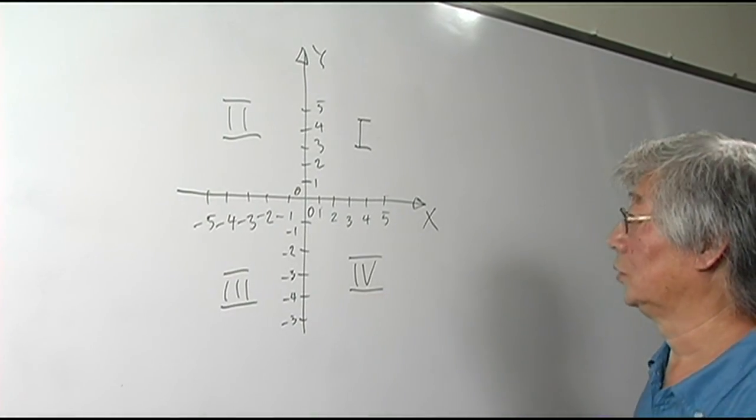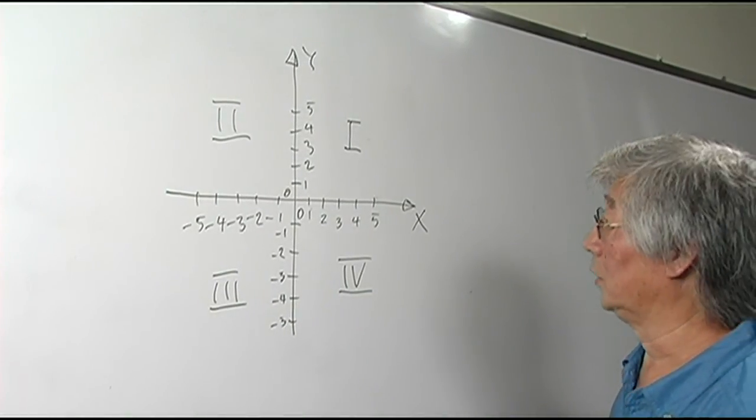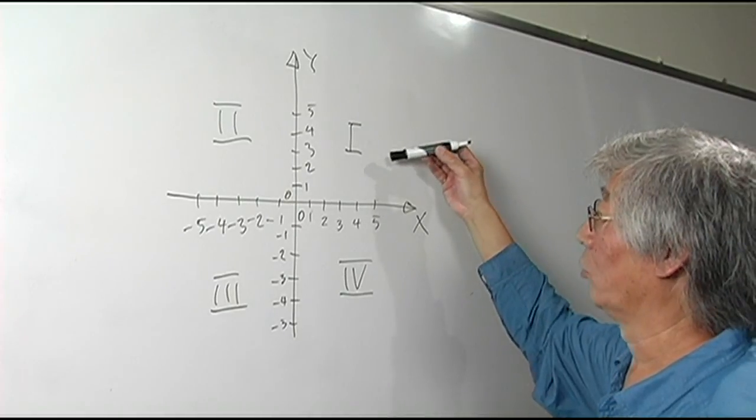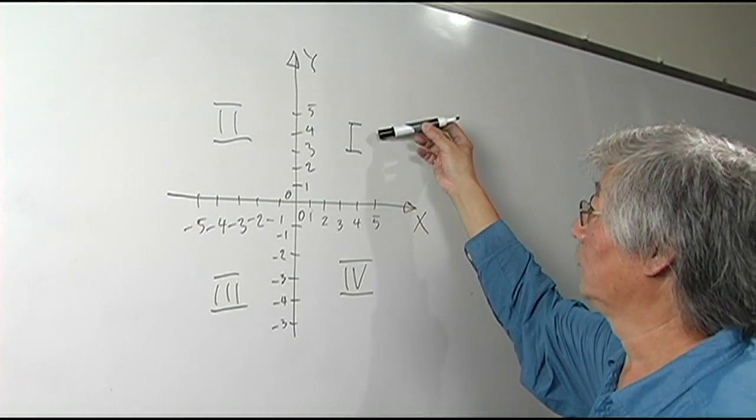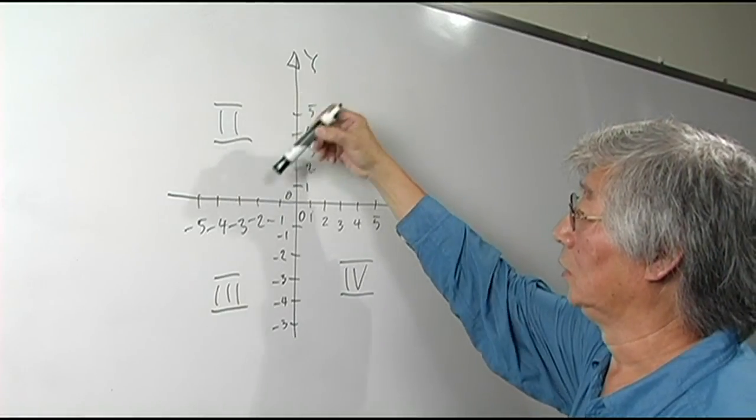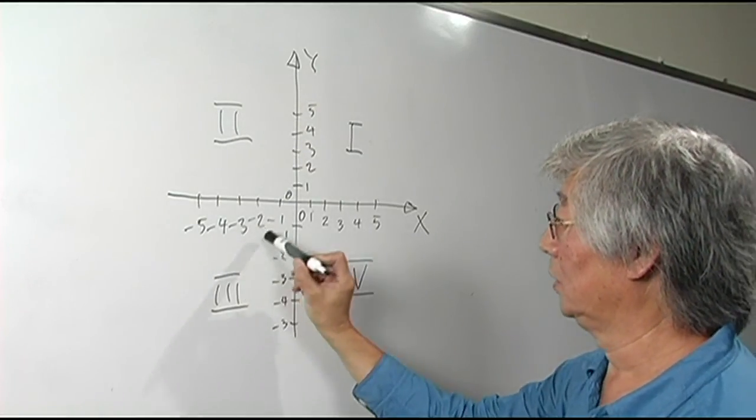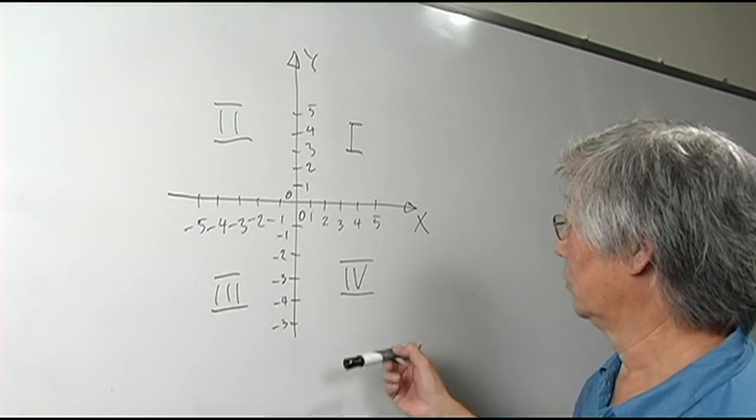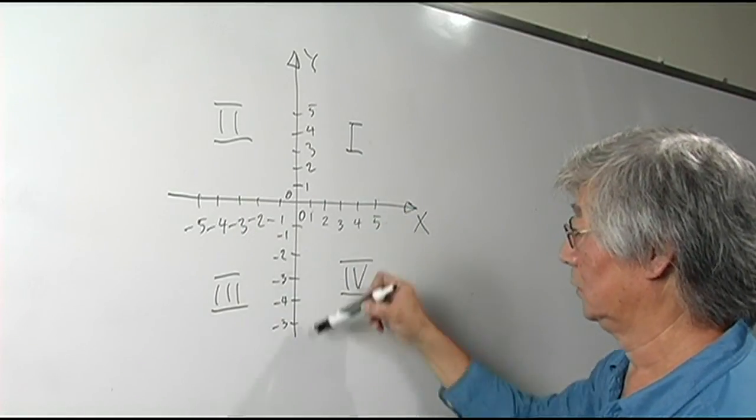So the Cartesian coordinate system is divided into four quadrants: Quadrant one has positive X, positive Y; quadrant two has negative X, positive Y; quadrant three has negative X, negative Y; quadrant four has positive X, negative Y.